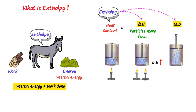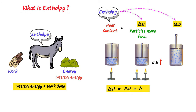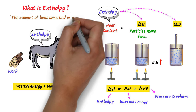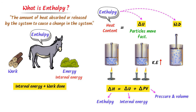We write: ΔH = ΔU + PΔV, since work W equals the product of pressure and volume. Therefore, enthalpy equals internal energy of the system plus the product of pressure and volume. We define enthalpy as the amount of heat absorbed or released by the system to cause a change in the system.